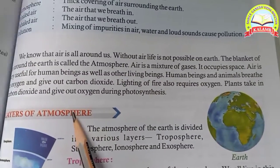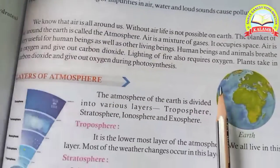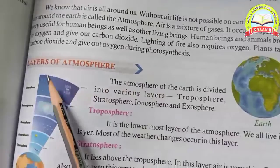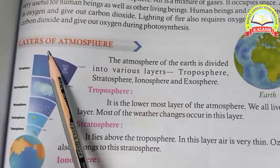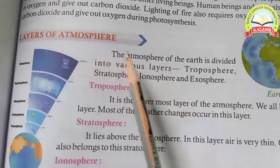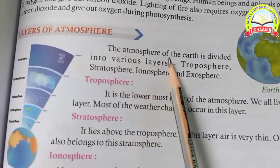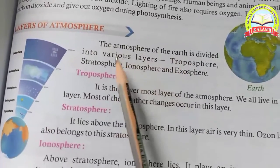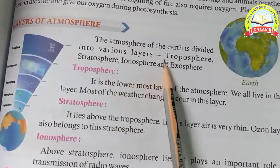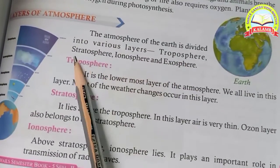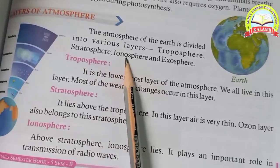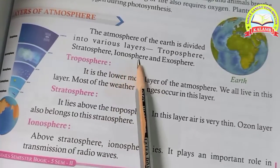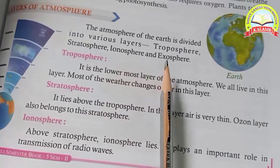The atmosphere of earth is divided into various layers: troposphere, stratosphere, ionosphere and exosphere.